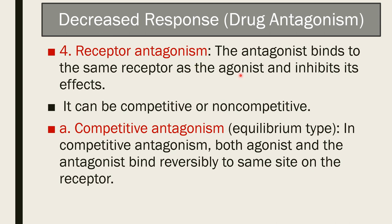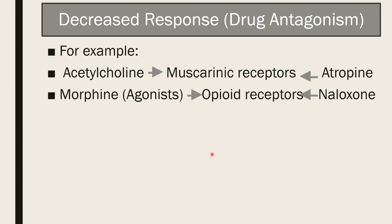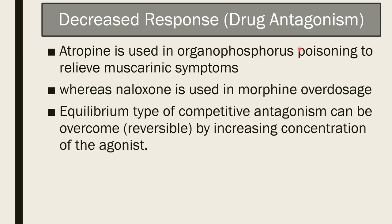Physiological antagonism: two drugs act at different receptors or by different mechanisms on some physiological system and produce opposite actions. For example, insulin and glucagon have opposite effects on blood sugar. Adrenaline and histamine both act on bronchial smooth muscle, but histamine produces bronchoconstriction via histamine receptors, whereas adrenaline produces bronchodilation via beta-adrenergic receptors. Hence, adrenaline helps relieve bronchospasm in anaphylactic reactions. Receptor antagonism: an antagonist binds to the same receptor as the agonist and inhibits the effect. It can be competitive or non-competitive.